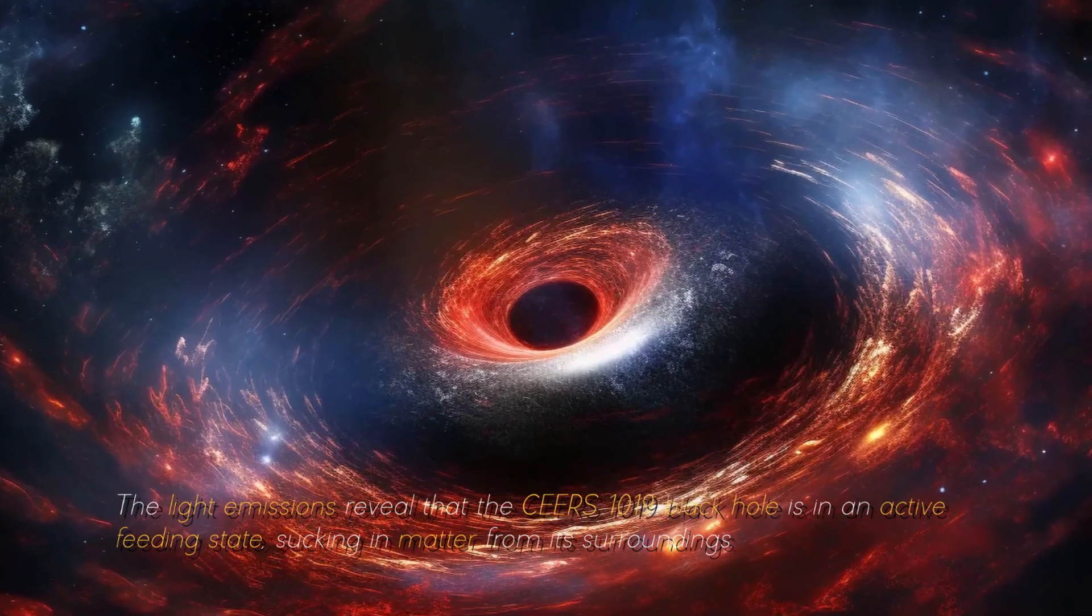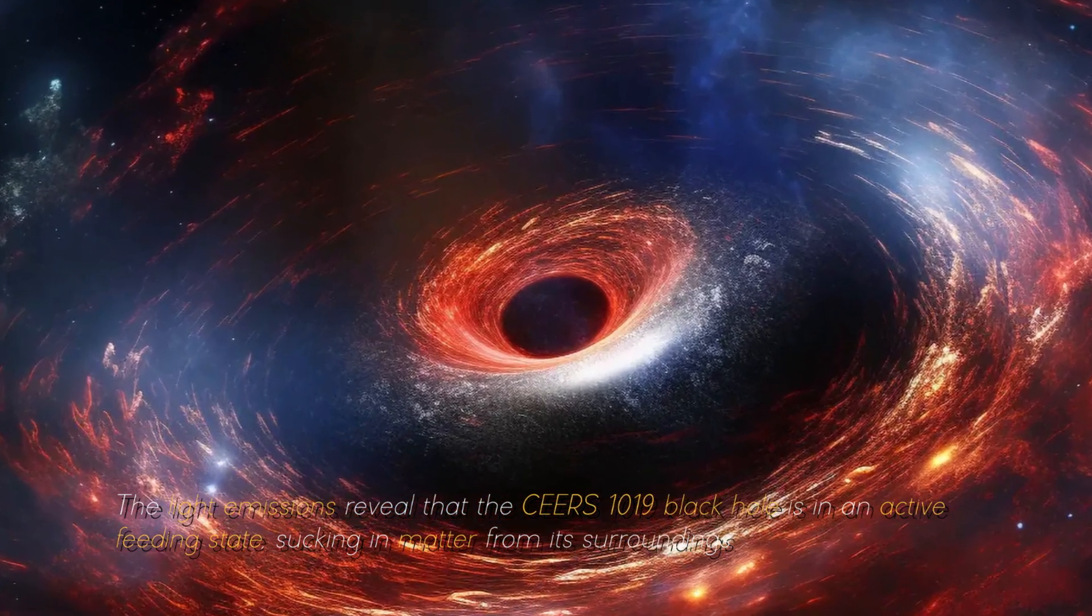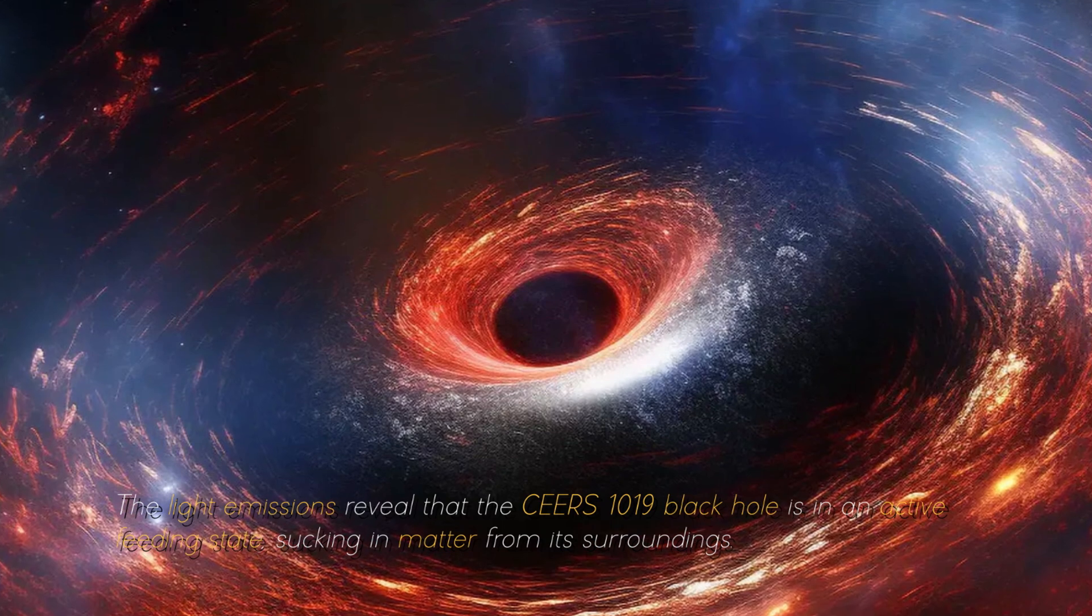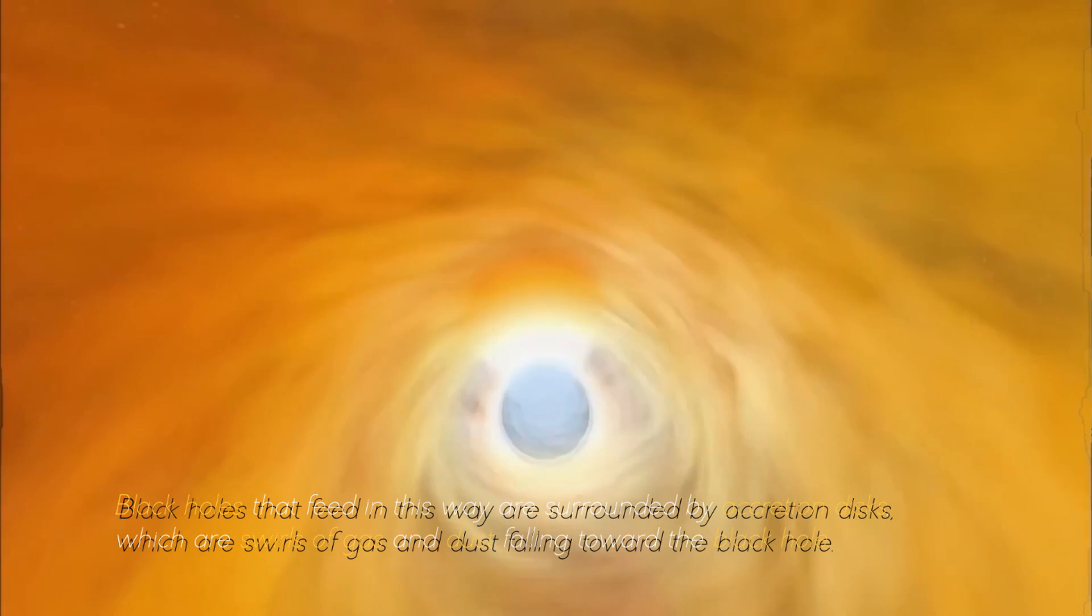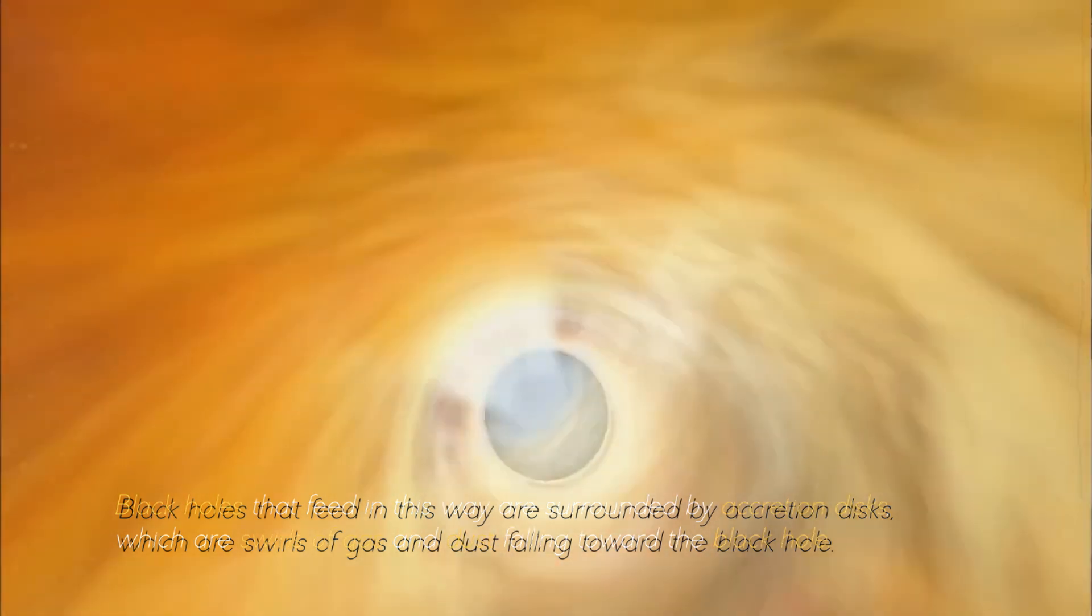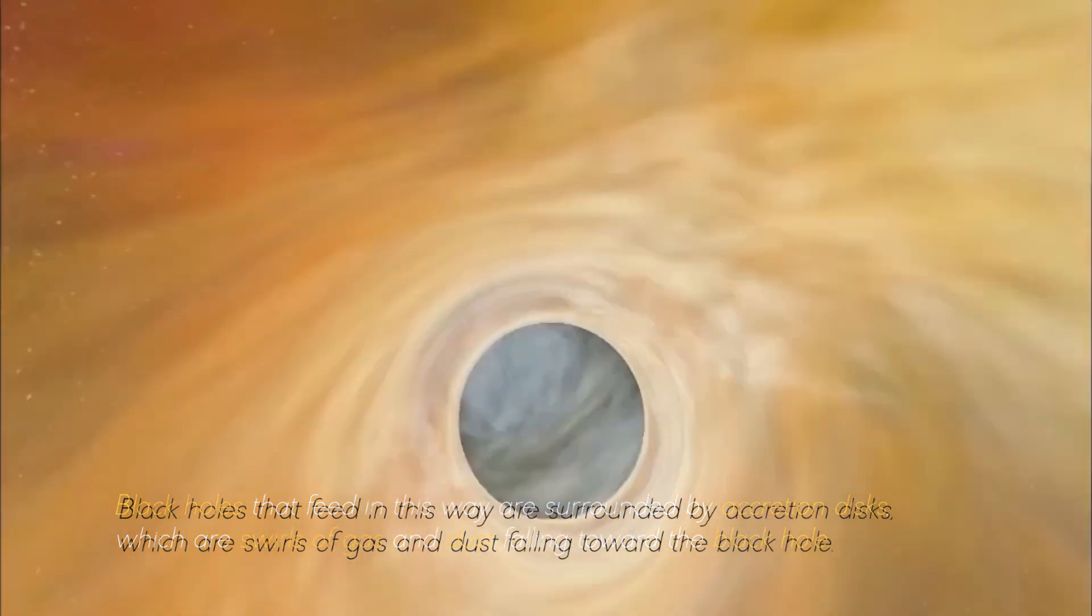The light emissions reveal that the CEERS 1019 black hole is in an active feeding state, sucking in matter from its surroundings. Black holes that feed in this way are surrounded by accretion disks, which are swirls of gas and dust falling toward the black hole.